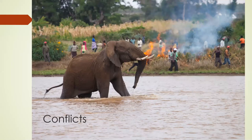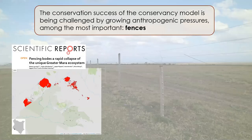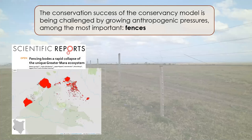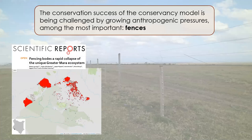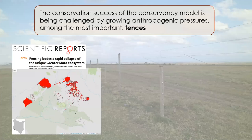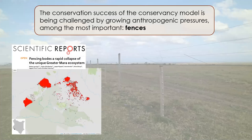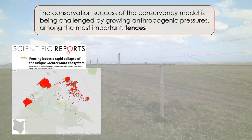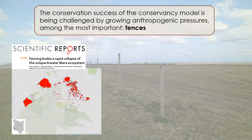Wildlife has often been on the losing end in these conflicts. Different approaches have been taken to ensure wildlife continues to thrive. One of the biggest challenges is fencing — most fences have been erected in areas next to protected areas such as the Maasai Mara. The results have been very detrimental, leading to the collapse of some of the greater ecosystems. We need to reevaluate and look at how we can coexist with wildlife and identify key areas that wildlife continues to use.